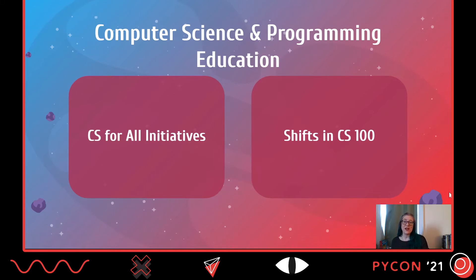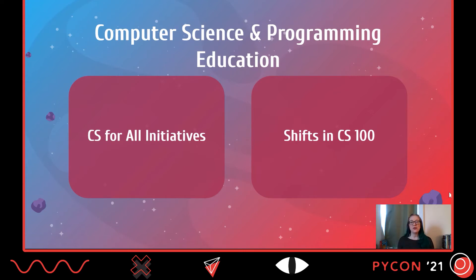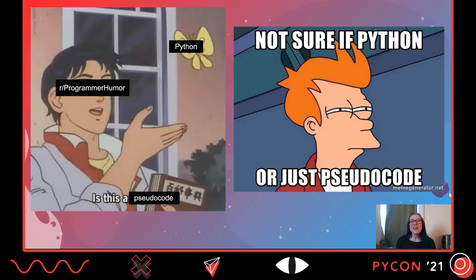The other trend is shifts in CS 100 classes, or intro to computer science at the college and university level. There's an increase in CS for non-majors courses, and some universities are even starting to require CS as a general graduation requirement. There's also some rethinking in intro to CS for majors at some universities. In both of these cases, Python is being used as a tool for equity — selecting Python as the programming language to introduce computer science is a deliberate choice to support equity for all learners.